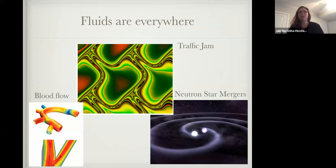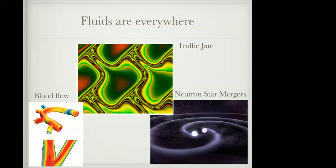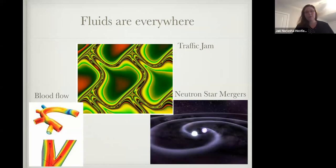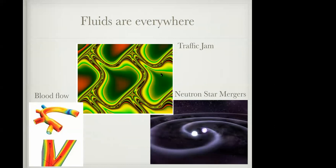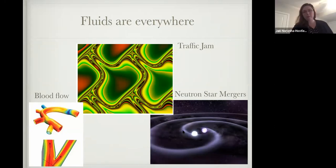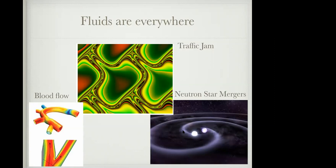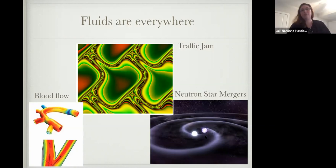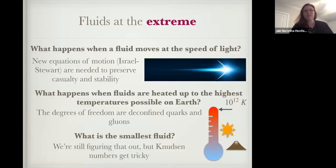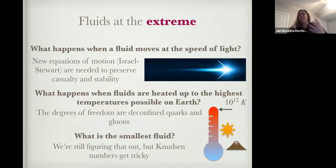People use fluid dynamics everywhere and on many different levels. You can think of blood flowing through your body, traffic jams — fluid dynamics is used to describe the motion of cars going through light signals. One recent example that's made a lot of news is neutron star mergers, when two large neutron stars merge together and collide.